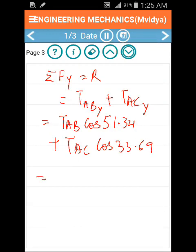Substituting the values of AB and AC, the net force in the vertical direction is 10.2065 kilonewtons.